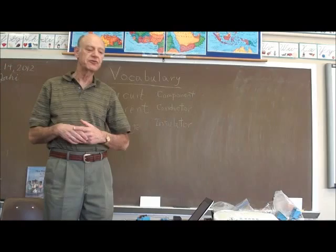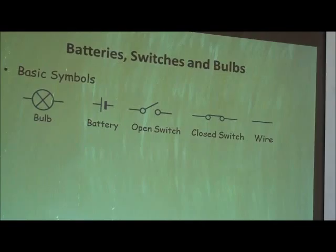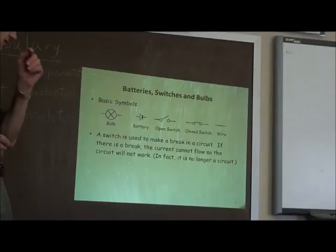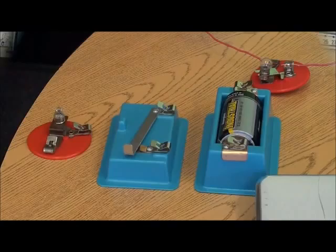I then show them some basic symbols for how we draw circuits, so they will recognize what a battery is, what a switch is, and the lines being just wires. I then introduce the concept of a switch and how it will make or break a circuit. The big point is that if you open the switch and break the circuit, you no longer have this loop, and electricity can no longer flow.